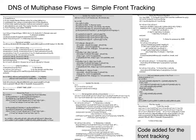The setup of the front is the few lines on the grey background in the first column, followed by the interpolation of the interface velocity and the advection of the interface points at the bottom. The construction of the marker function is the grey code in the middle column, and the restructuring of the front by adding and deleting points is the grey code in the third column. Note that we loop over the front both when we find the velocities at the interface points and when we construct the marker function.